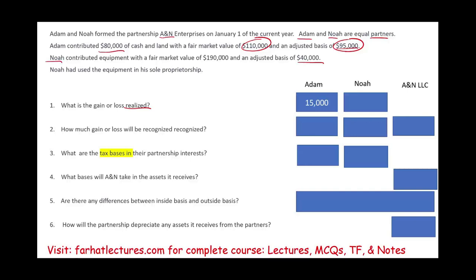Noah had a fair value of $190,000 with a basis of $40,000, so Noah would have had a gain of $150,000. That's the gain realized. It's not a loss — it's a gain, and that's the amount realized. The formula is consideration received minus the basis.